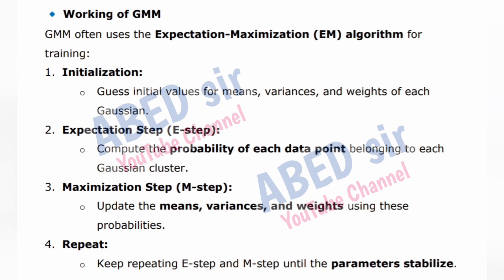Working of GMM: Step 1: Initialization — guess initial values for means, variances, and weights of each Gaussian. Step 2: Expectation step (E-step) — compute the probability of each data point belonging to each Gaussian cluster. Step 3: Maximization step (M-step) — update the means, variances, and weights using these probabilities. Step 4: Repeat E-step and M-step until the parameters stabilize.